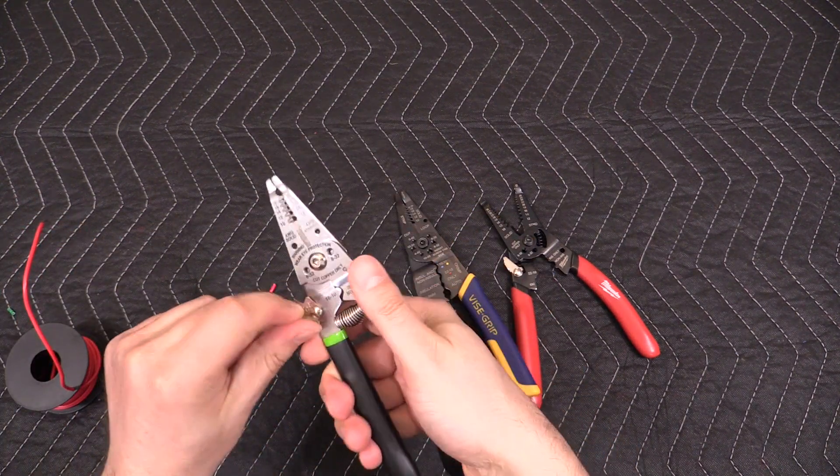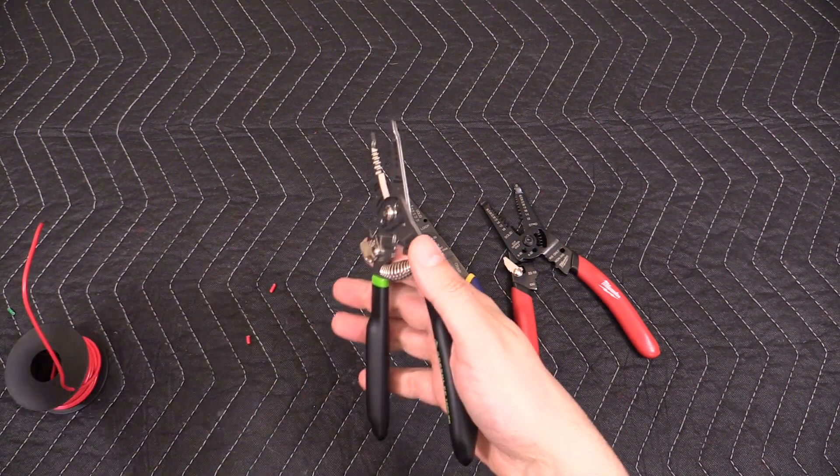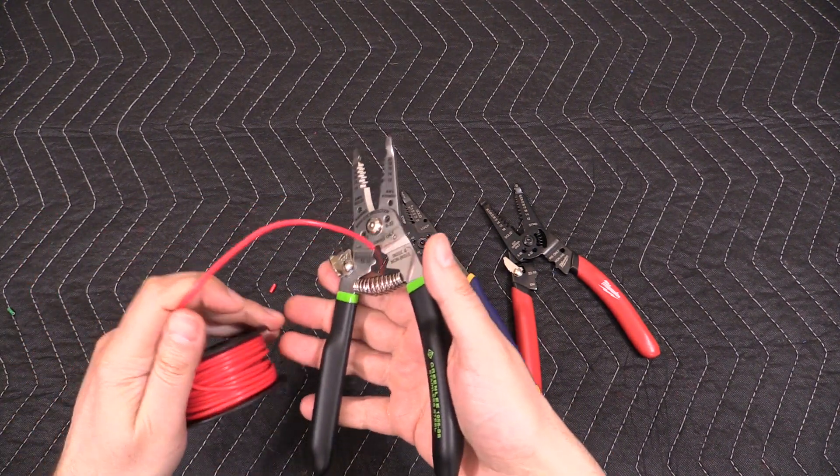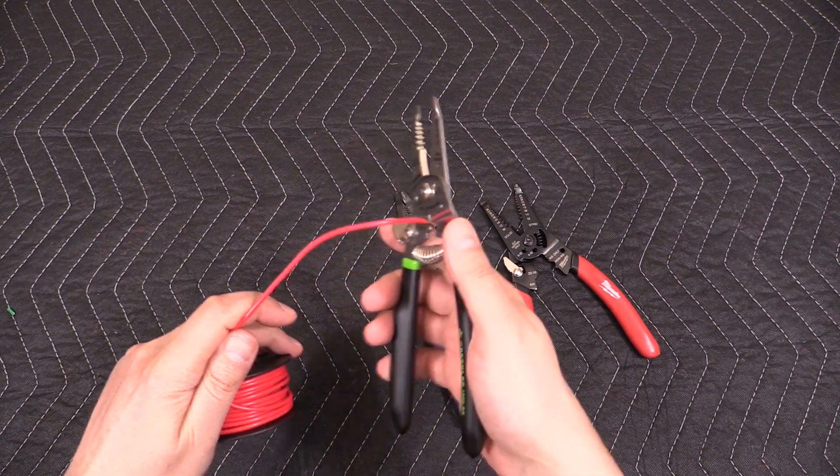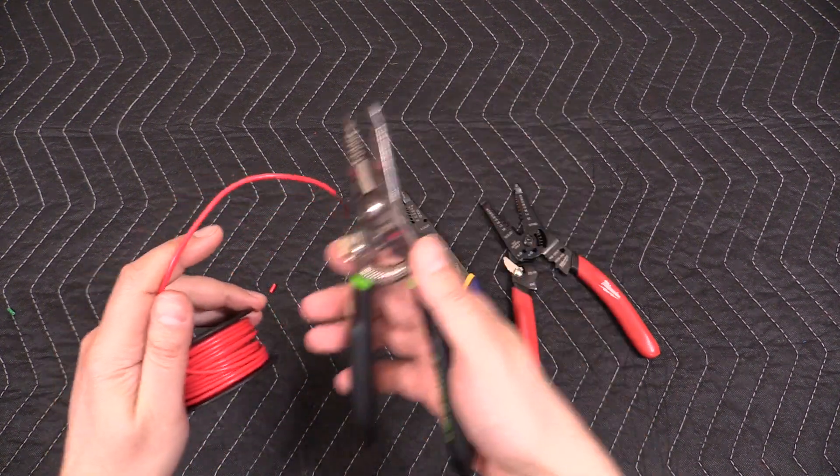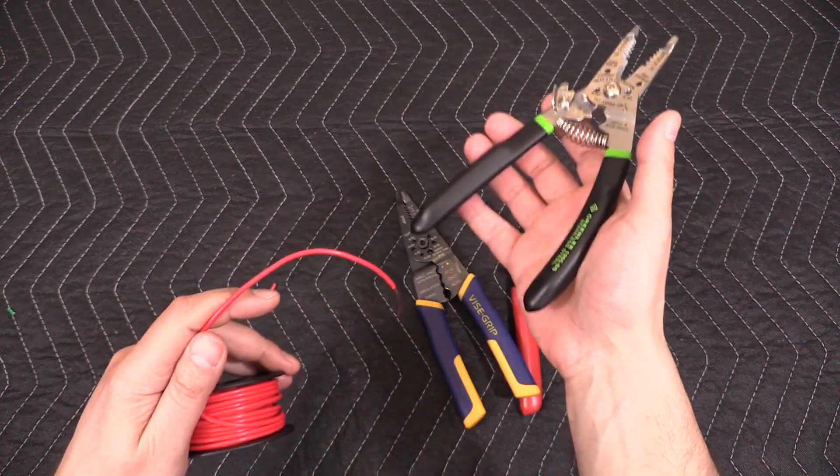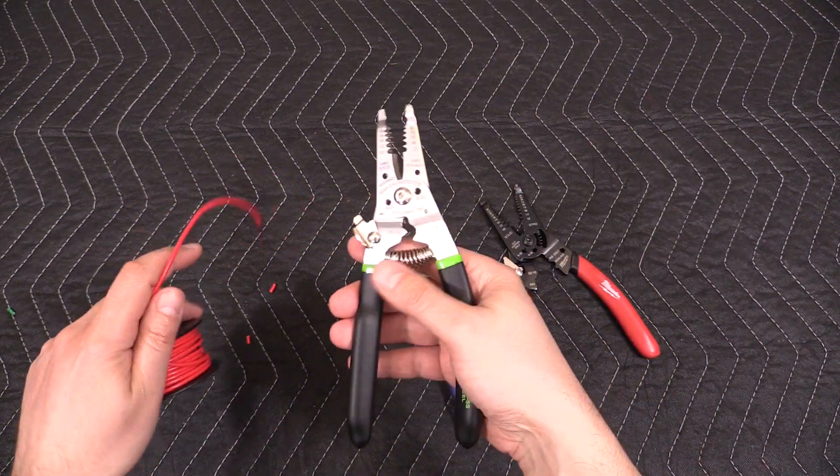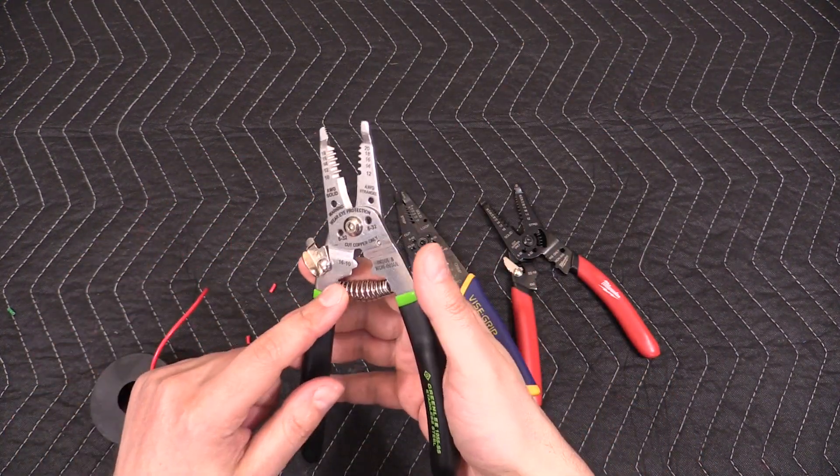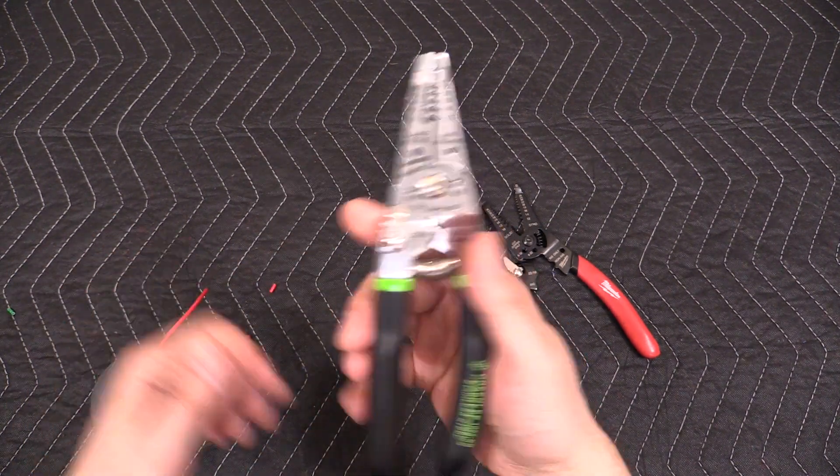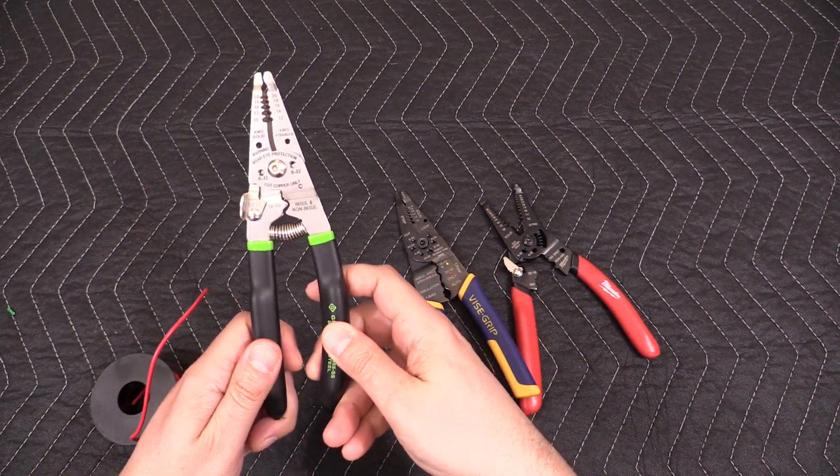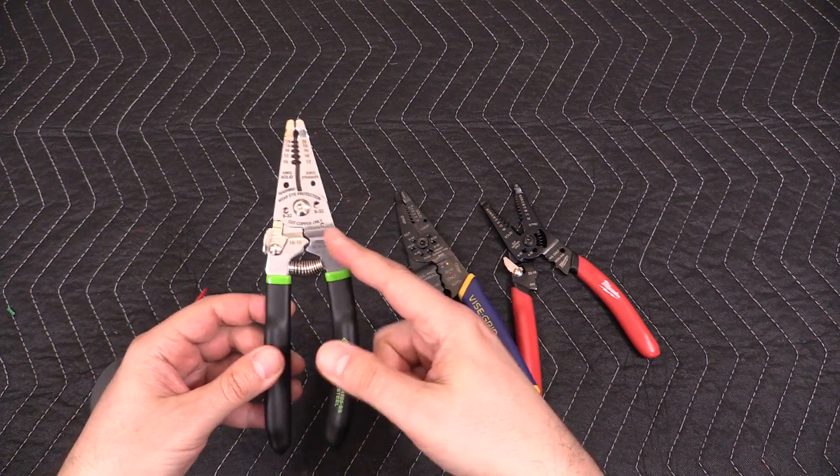Also because the spring is in the way of the crimper, like say you were making a crimp on a wire - well now if you can't pull it off sideways then you pretty much have to take the spring off to get the wire off of the crimp. So that's another thing that I don't like about this Greenlee stripper. And really I mean I do not recommend buying these if you're looking for a stripper.